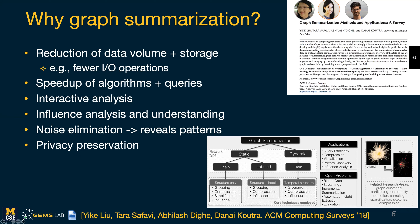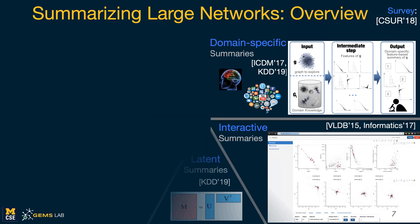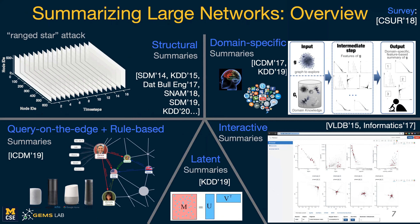With my students, we've written a survey on graph summarization where we cover different methods, categorize them in terms of the input graphs on which they apply, and also based on the techniques, and we discuss open problems. Over the years, we've worked on a lot of different aspects of summarization — we've introduced domain-specific summaries, interactive summaries, latent summaries that I will discuss later today, as well as different types of summarization of knowledge graphs to enable on-device computing or error detection and completion of knowledge bases. A lot of my work also falls under structural summaries where we want to find interesting patterns in the data.